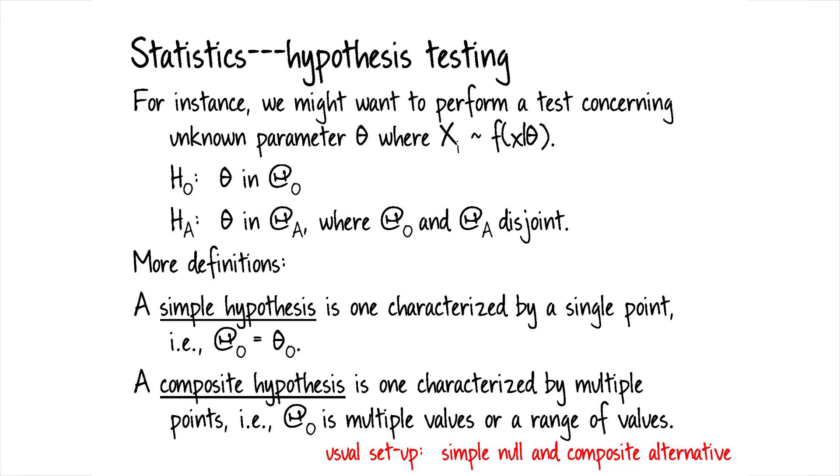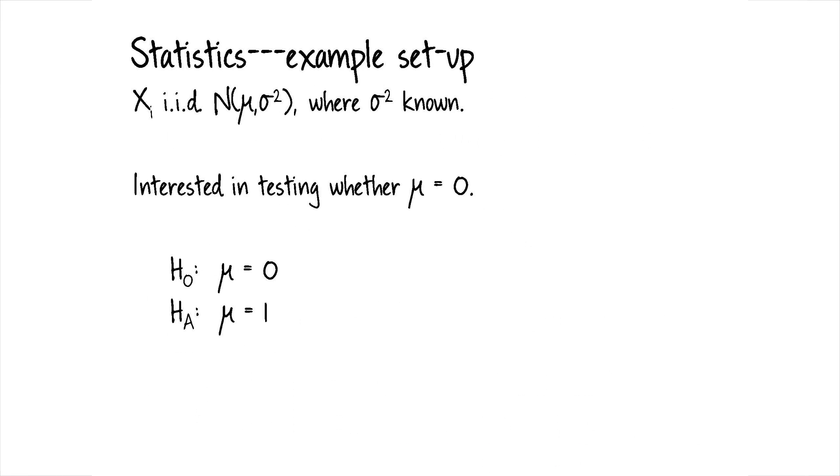Usual setup is that we have a simple null and we have a composite alternative. And again, the usual setup is that those are complementary. So they cover the entire parameter space. Doesn't have to be that way, but that's sort of the usual setup.